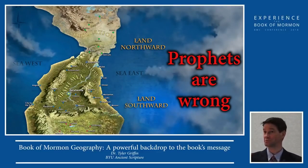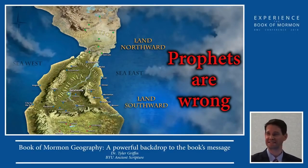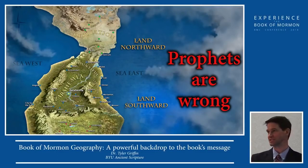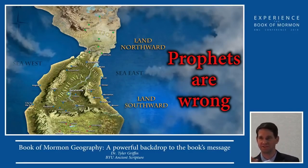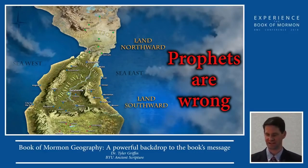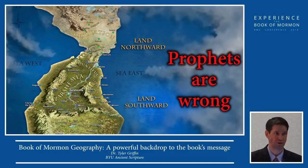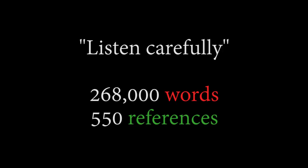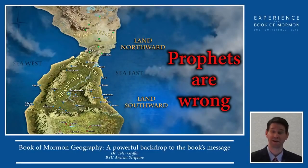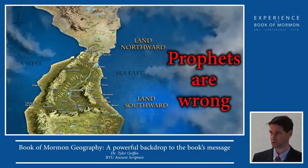Really quickly, just a couple of numbers here. As was introduced in one of the opening sessions this morning, there are 268,000 words in the Book of Mormon. Now listen carefully. Out of 268,000 words in the Book of Mormon, we have approximately 550 references to geography in the book. 550 references out of 268,000 words.